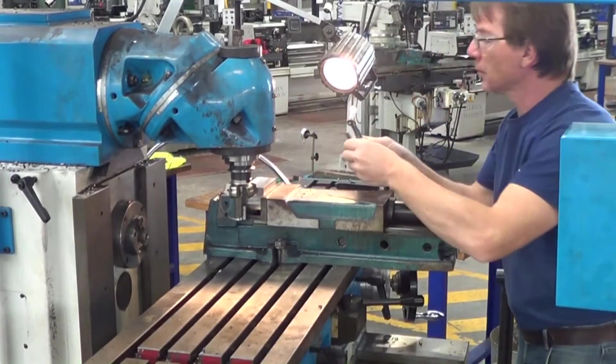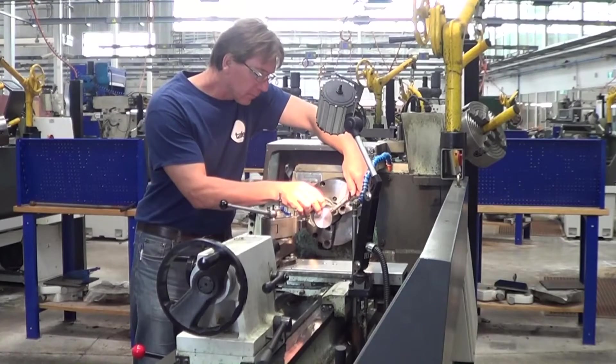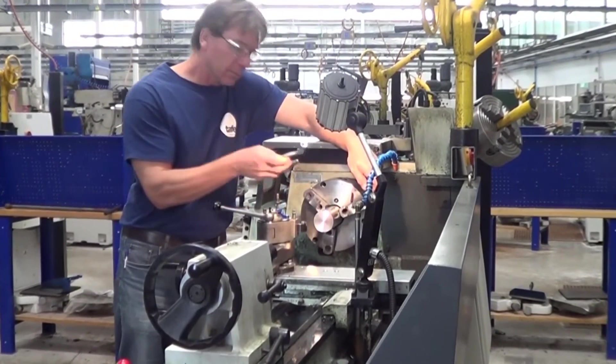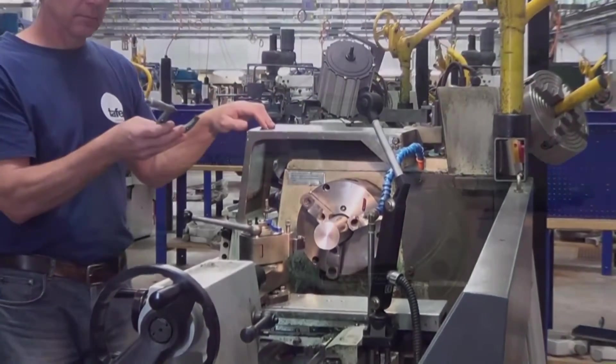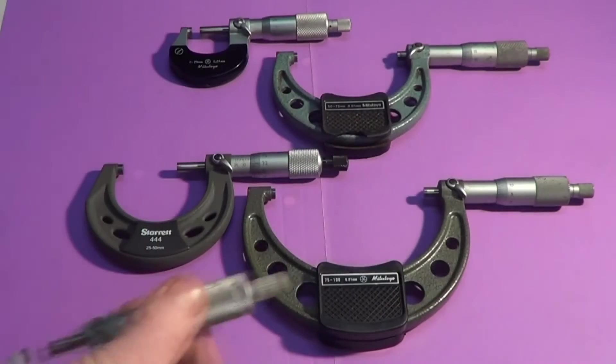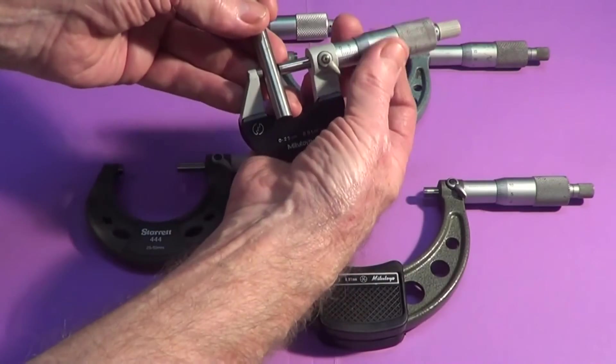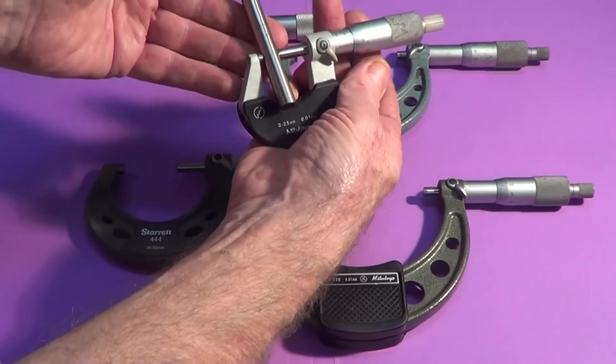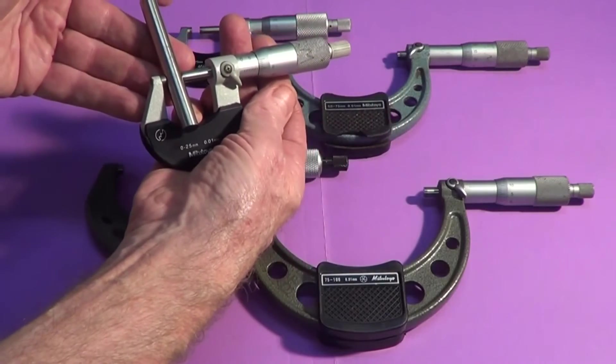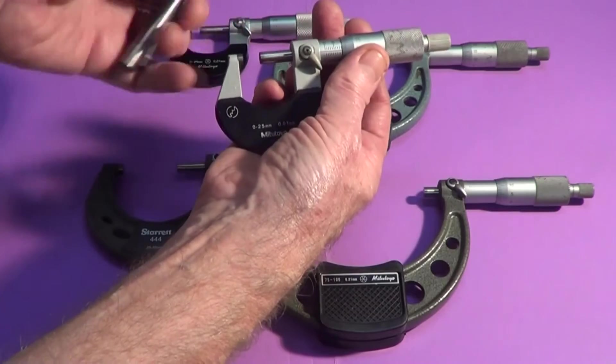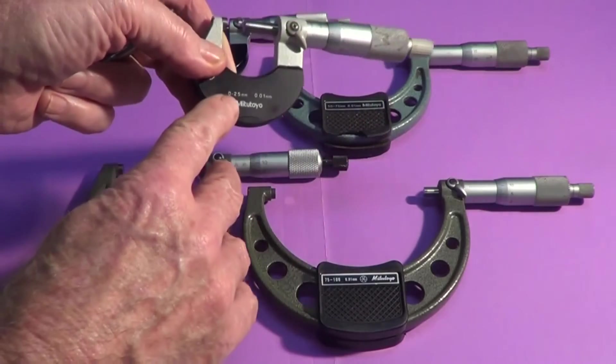Welcome to this video on micrometers and how to read them. When engineering components have got to be manufactured to a high degree of accuracy, the best measuring tool to use is a micrometer. A micrometer is capable of measuring to one one-hundredth of a millimeter.